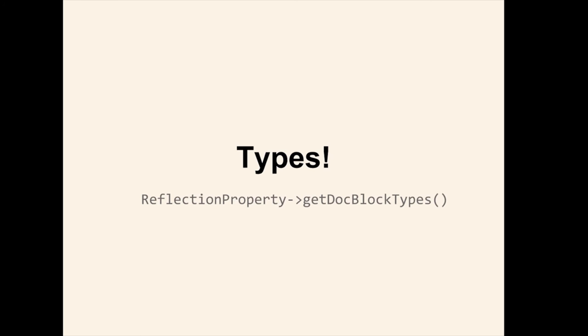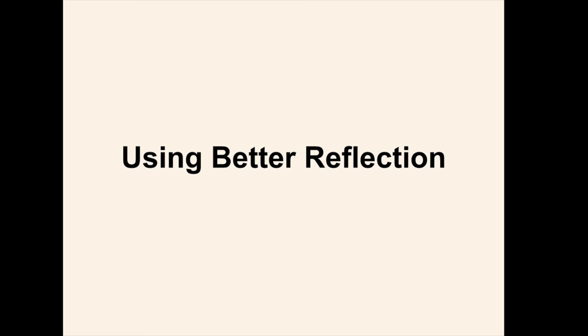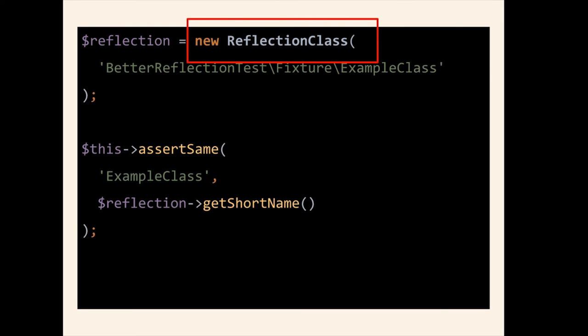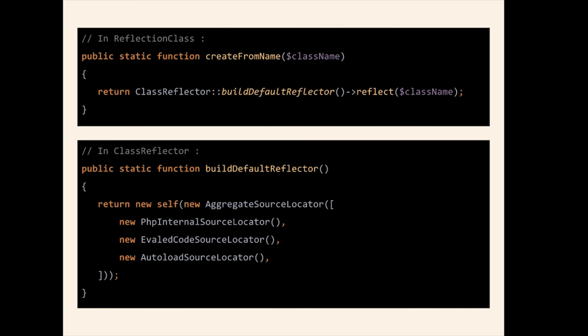I'm just going to very quickly show you how to use Better Reflection. We tried to stay as similar as possible to the core reflection API. Where you'd instantiate a new reflection class like this, in Better Reflection you just use ReflectionClass::createFromName. All the other functions you get back are the same. Under the hood, as I mentioned, we've got these source locators — when you're calling createFromName, you're building a default list of source locators to use: the PHP internal source locators so you can reflect on internal classes, and also eval'd code and auto-loading code as well.